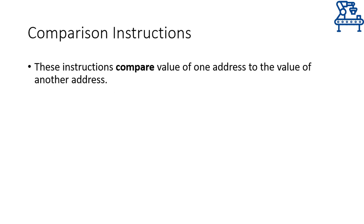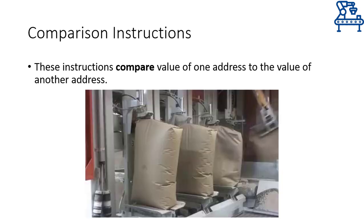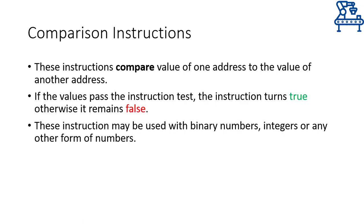Comparison instructions are used to compare contents of two separate addresses or the value of an address with some constant. For example, if a PLC is controlling the filling of a cement bag and the weight sensor is telling the PLC how much cement has been filled, then the PLC will continuously compare the weight sensor value with the desired weight value to see whether the required filling has been achieved or not. The comparison instructions pass the values through a comparison test, and if the values pass the test, the instruction returns a true output, otherwise the output is false.